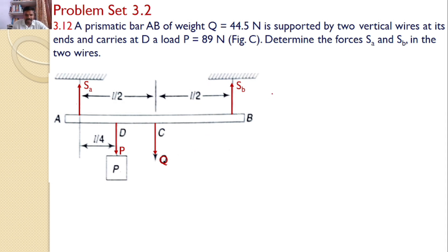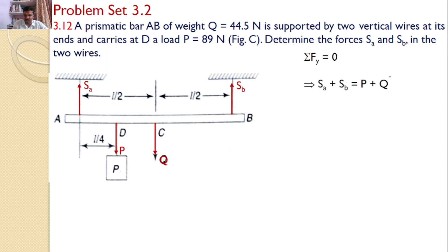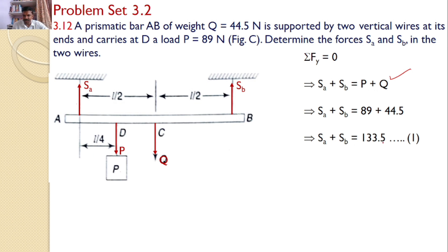Now let us apply the equilibrium equations. The first equilibrium equation: sigma FY equals 0. There are two forces acting upwards and two forces acting downwards. Hence, SA plus SB equals P plus Q. Substituting the given values for P and Q, we get SA plus SB equals 133.5 N. This is equation number one.